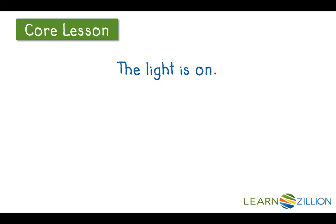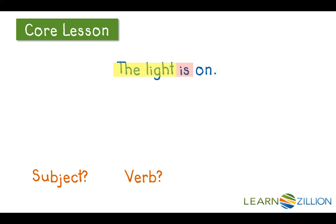'The light is on.' Ask yourself, what's the subject of the sentence? What is the sentence about? It's about the light. What's the verb? The verb is the word 'is.' So it's got a subject and it's got a verb.